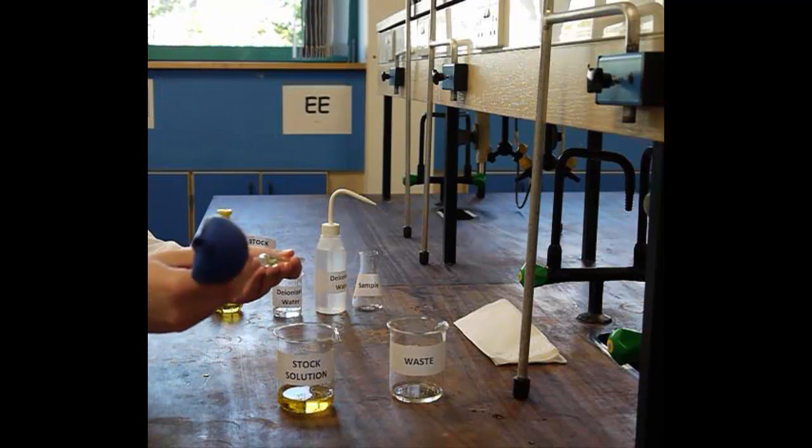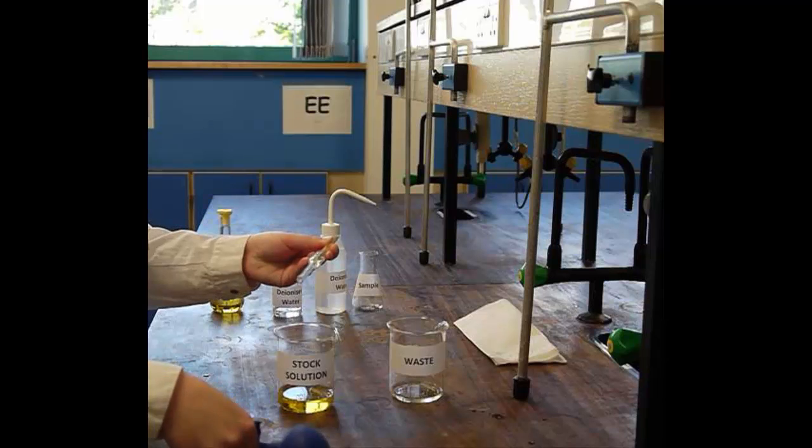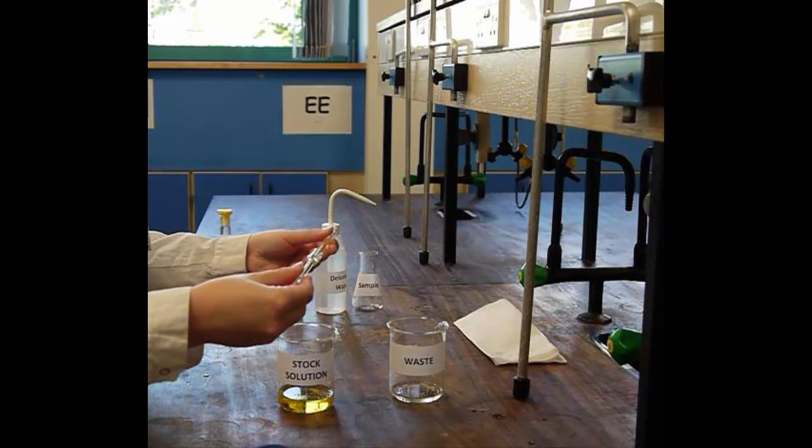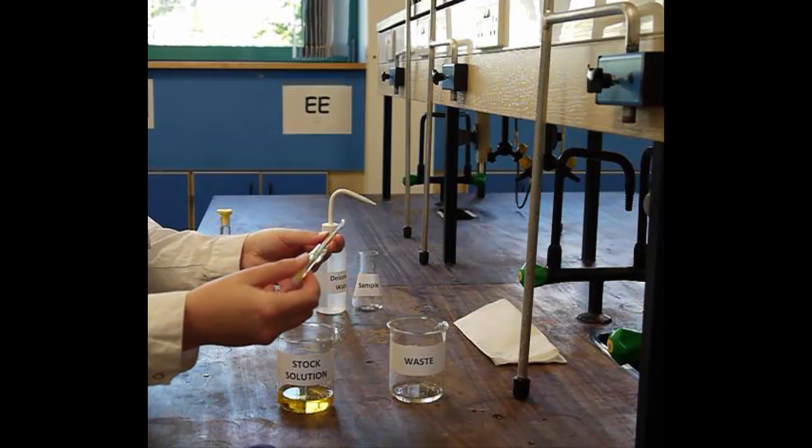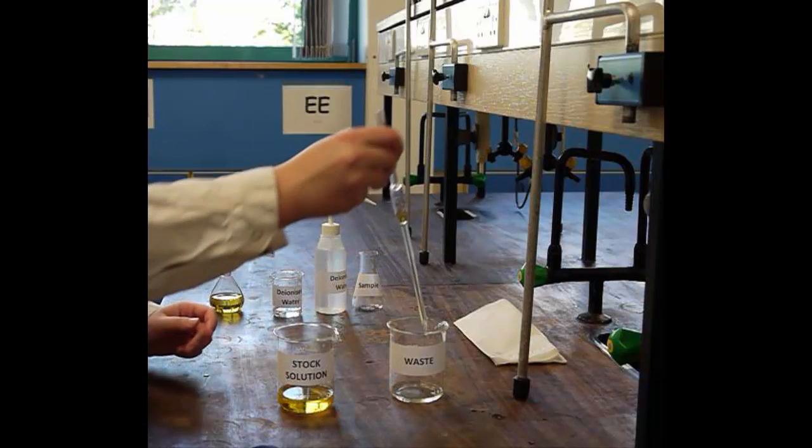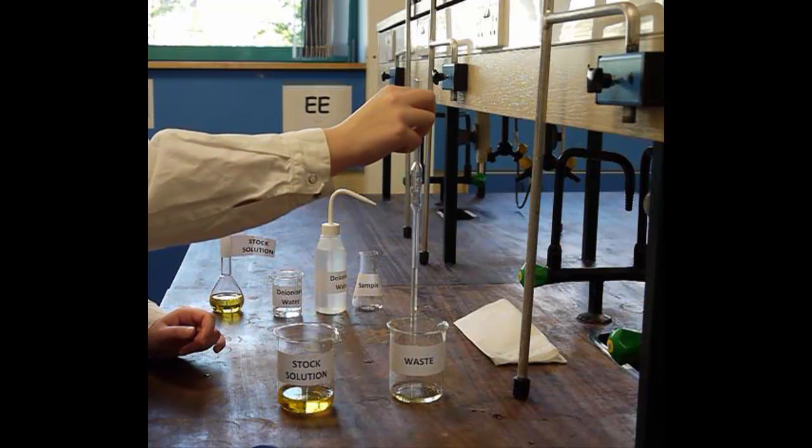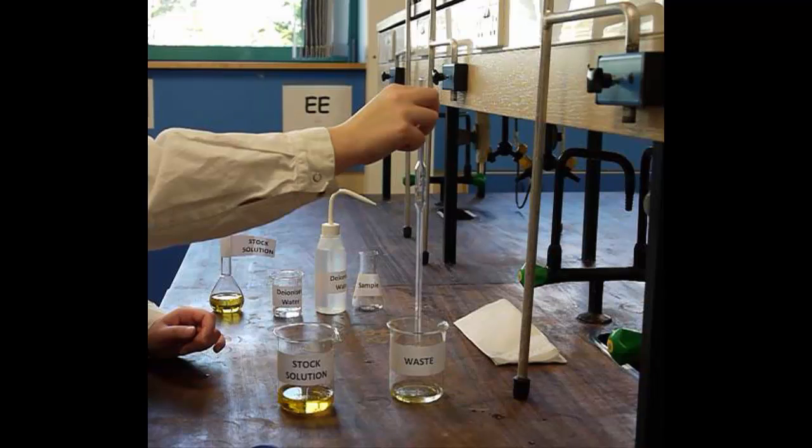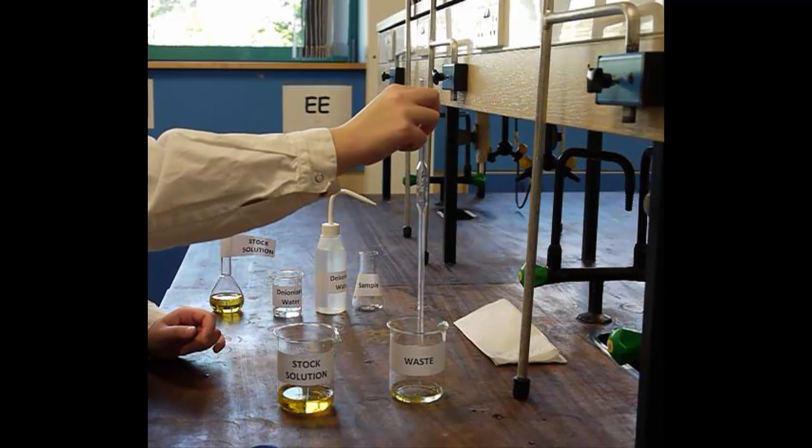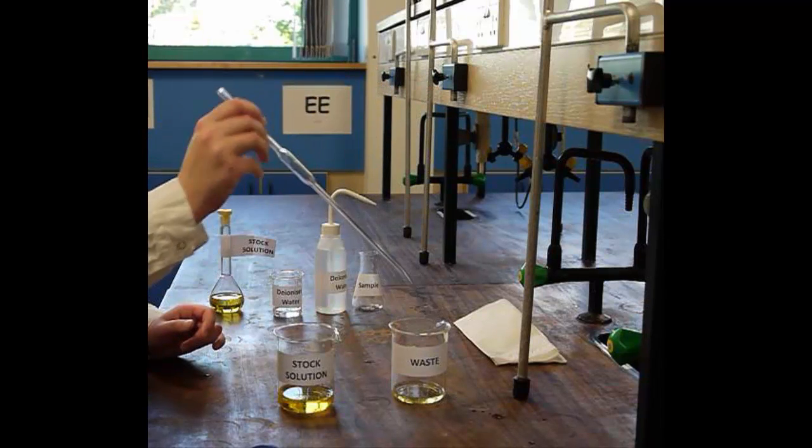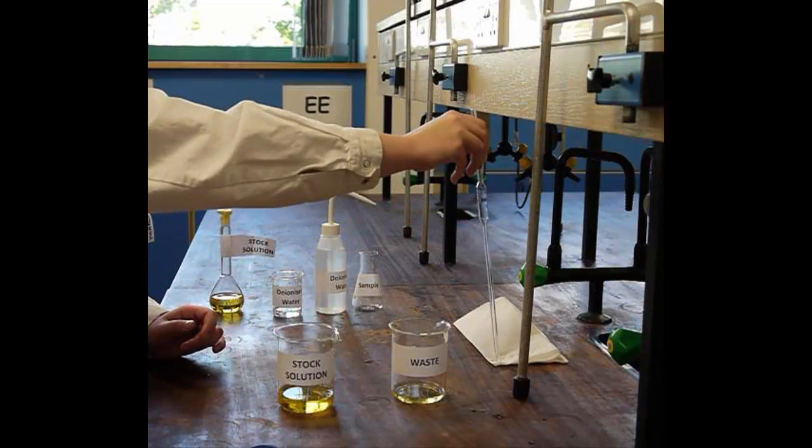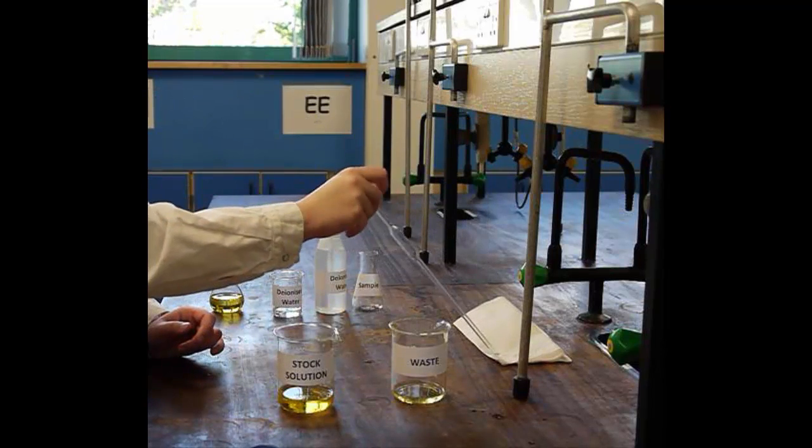Fill the pipette with a small amount of the solution and roll around the inside of the glass by rotating and tilting the pipette. Dry the end of the pipette by dabbing it in a paper towel.